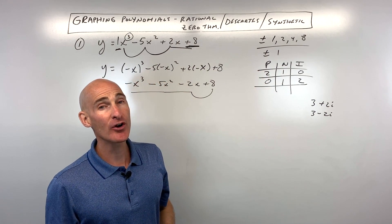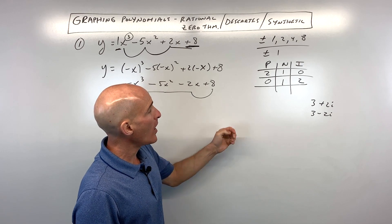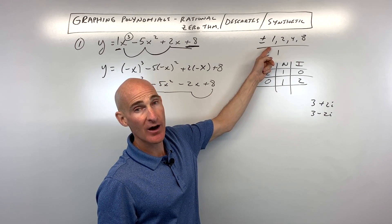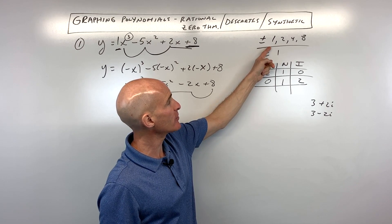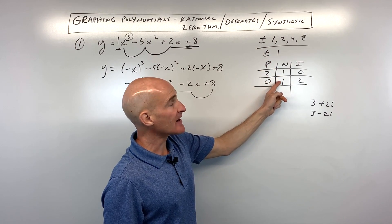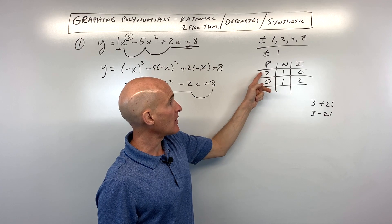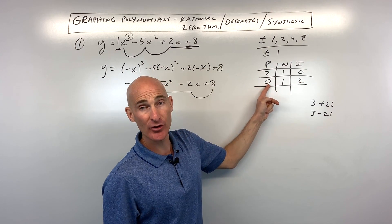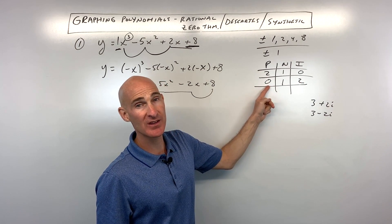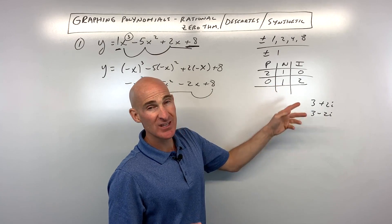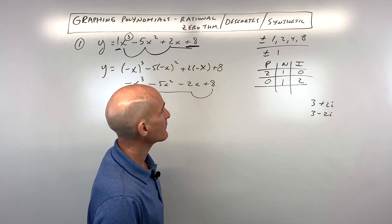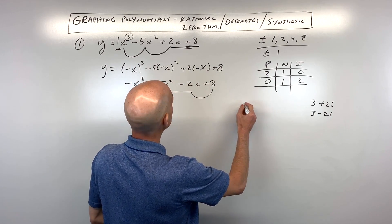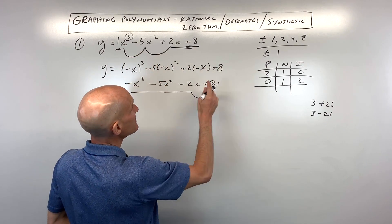Now you're saying, how does that help us? Well, when I go to check these possible zeros from the rational root theorem, I know that there's exactly one negative. If I look for the positives and it's that second scenario, I might be looking all day and not find them because there might be none. So to be strategic about this, I might want to go after the negative zero first. So let's go ahead and do our synthetic division.